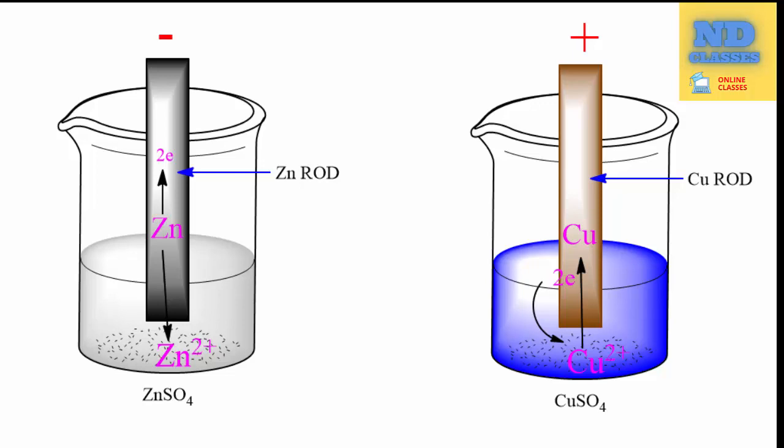These charged rods attract oppositely charged ions from solution. Negative rod attracts cations, while positive rod attracts anions.